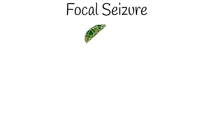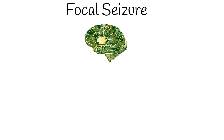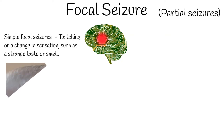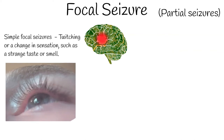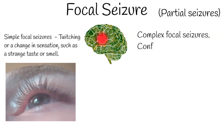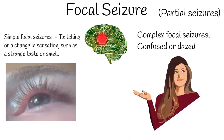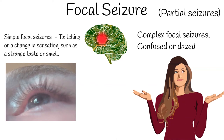Second, focal seizures are located in just one area of the brain and are also called partial seizures. Within focal seizures there are several different types. Simple focal seizures affect a small part of the brain and can cause twitching or a change in sensation, such as a strange taste or smell. Complex focal seizures can make a person with epilepsy confused or dazed.